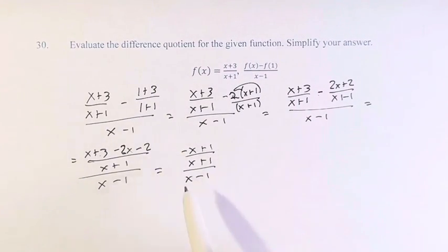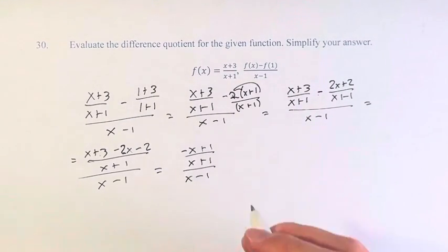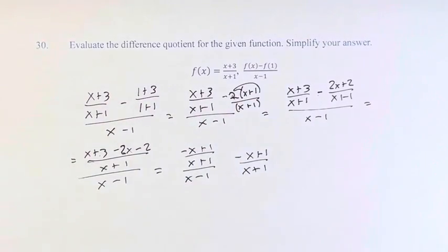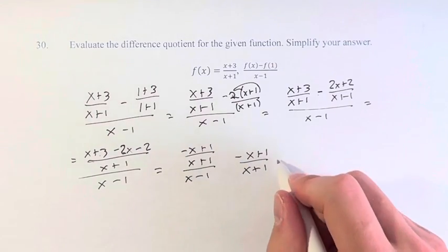So we have this fraction divided by this fraction. So what we're going to do is take the top, negative x plus 1 over x plus 1, and we're going to multiply it by 1 over the denominator.